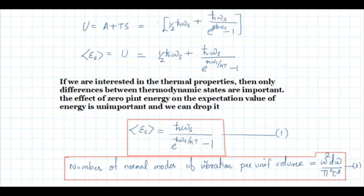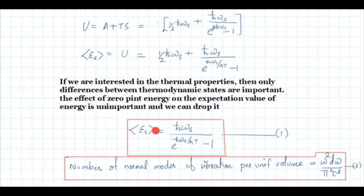So the expectation value ⟨E_s⟩ = ½ℏω_s + ℏω_s / (e^(ℏω_s/kT) − 1). If we are interested only in thermal properties, the zero-point energy is unimportant and can be dropped, since only differences between thermodynamic states matter. Therefore, ⟨E_s⟩ = ℏω_s / (e^(ℏω_s/kT) − 1). Call this equation 1. Since frequency can vary, we next need to find the number of normal modes of vibration per unit volume.